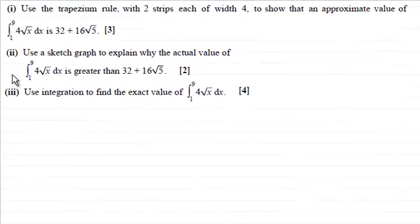In this question we've got to use the trapezium rule with two strips each of width 4 to show that an approximate value of the integral of 4√x with respect to x between the limits x equals 1 and x equals 9 is 32 plus 16√5.